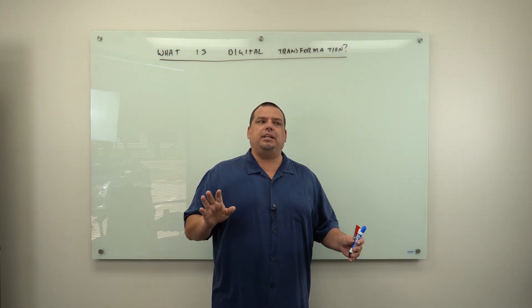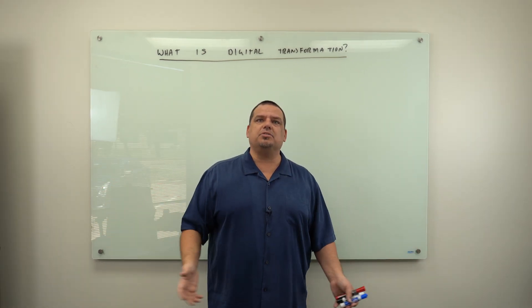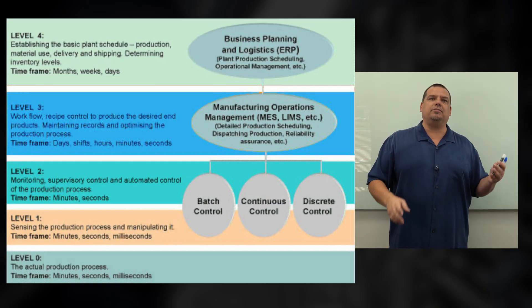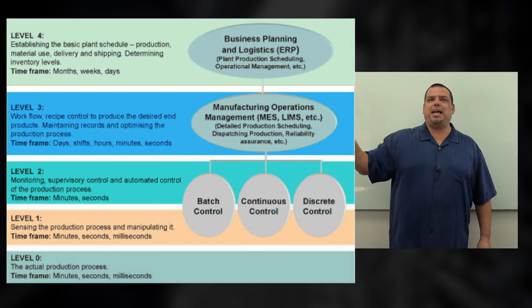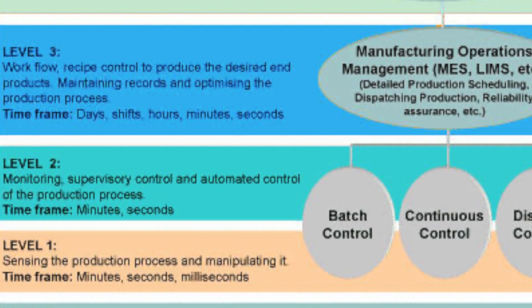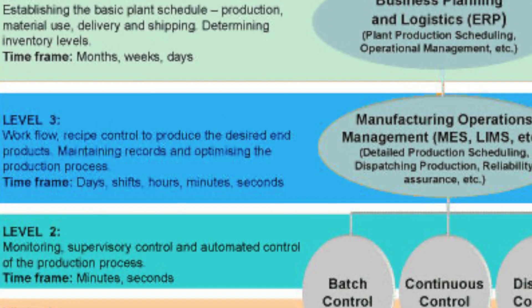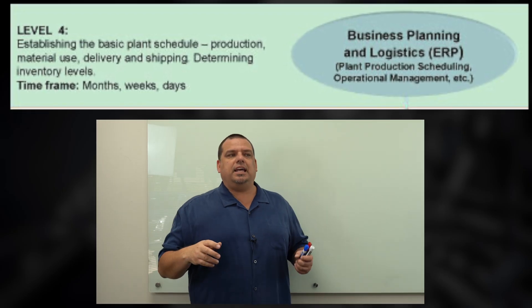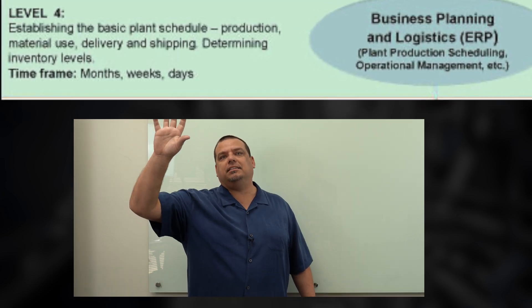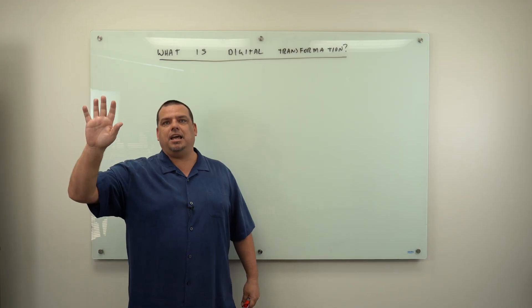On an Industry 3.0 manufacturer estimates those numbers. Those numbers are at a, if you look at the ISA 95 standard part one for manufacturing operations management, and you look at what that data is supposed to be, that's at like a monthly level. It says at the monthly or weekly level, right? The Teslas of the world, that's real time data at level three. At the MOM layer.